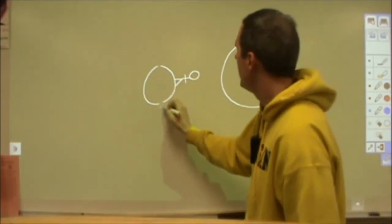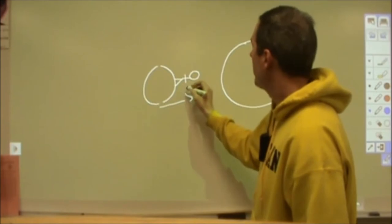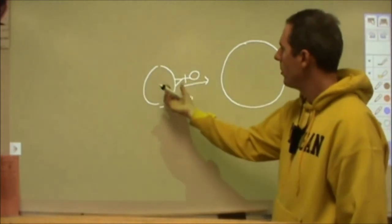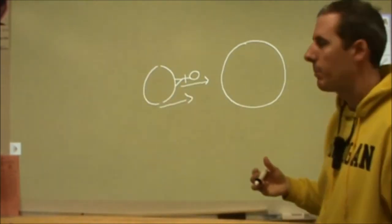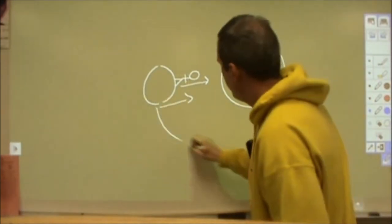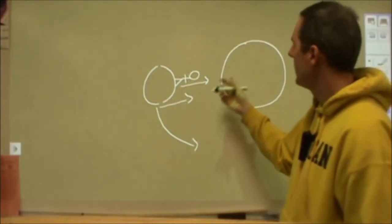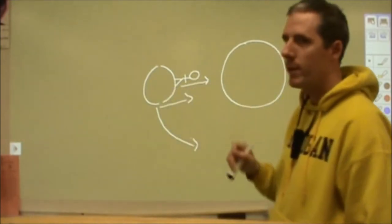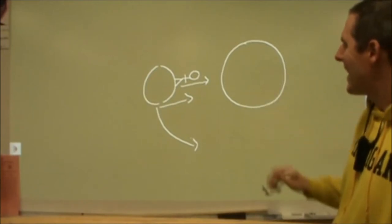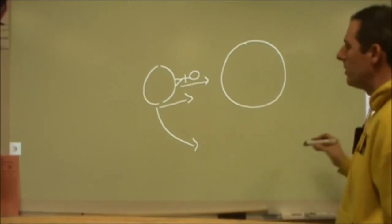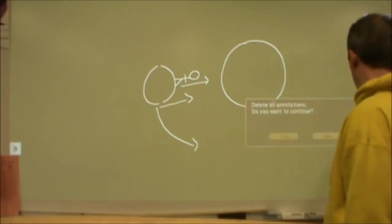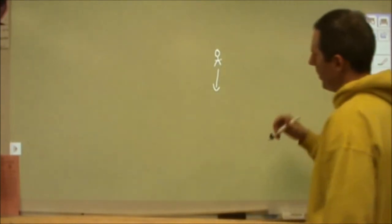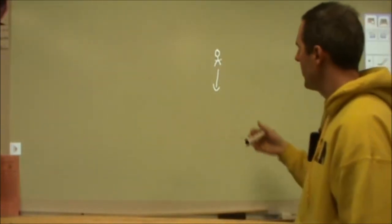There is a gravitational acceleration between the earth and that object, and a gravitational acceleration between you and that object, and they are the same — just like all accelerations on the earth are the same. So you're going to move together. When you're in space, you're literally just falling — and as you're falling, the earth's curvature is moving away from you at the same rate that you're falling.